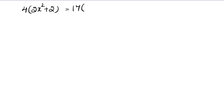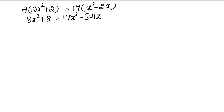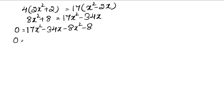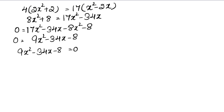Cross multiplying gives 4 × (2x² + 2) = 17 × (x² − 2x). Opening the brackets: 8x² + 8 = 17x² − 34x. Taking all terms to one side, signs change: 0 = 17x² − 34x − 8x² − 8, which simplifies to 9x² − 34x − 8 = 0.